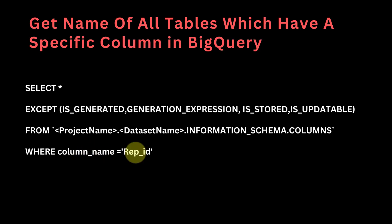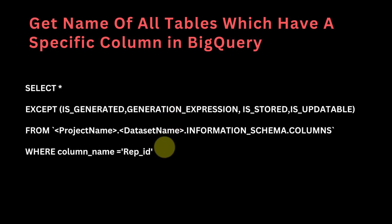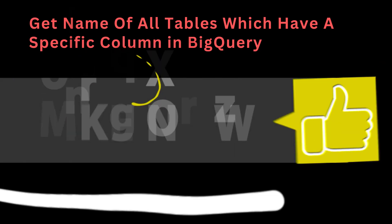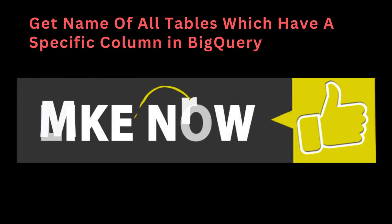Finally, the last line is WHERE column_name is equal to the specific column name you have in mind. In this case I've chosen the rep_id column name. This query will return all of the tables which contain a column where the name of that column is rep_id, and that's how it's done.